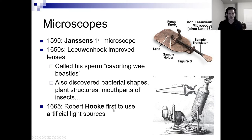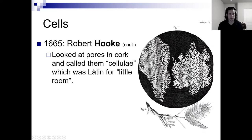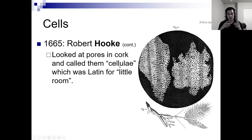Then comes along Robert Hooke, and he was the first to use artificial light sources — not natural light, not sunlight. He actually burned whale oil to provide light for his microscopes. He spent a lot of time looking at pores in cork, and he was also a monk who lived in a monastery where they had these little rooms called 'cellulae.' So that's what he called the square little rooms within plant cells — he called them cellulae — and that eventually evolved to be called cells.